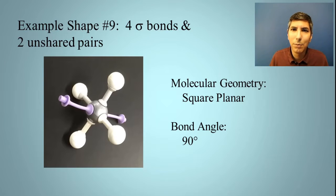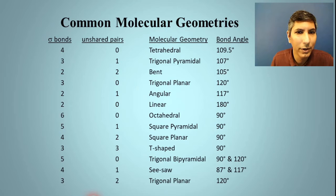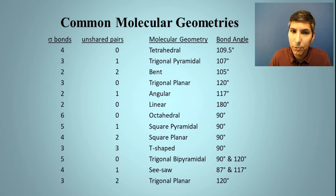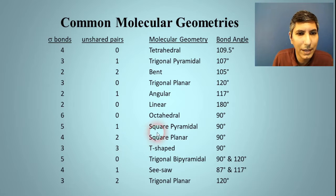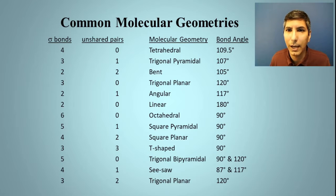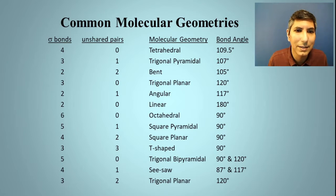Those are the nine most common molecular geometries and bond angles. To summarize, there are also a few additional shapes we didn't model — square pyramidal, T-shaped, seesaw, and another trigonal planar variant. It's good to know those. You are expected to memorize these molecular geometries and bond angles for the AP exam or general chemistry in college.